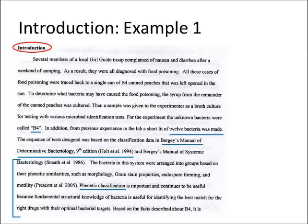Let's go ahead and take a look at an example of a good introduction. Best thing to start out with is your subtitle — introduction should start with 'Introduction.' Then we jump into a backstory: 'Several members of a local Girl Guide troop complained of nausea and diarrhea after a weekend of camping. They were diagnosed with food poisoning. All these cases were traced to a single can of B4 canned peaches that was left open in the sun.' So a little bit of backstory, giving your experiment context, calling your organism by name — in this case B4 — and then making a short list of 12 bacteria, referencing the Bergey's manual whenever you talk about your dichotomous key.